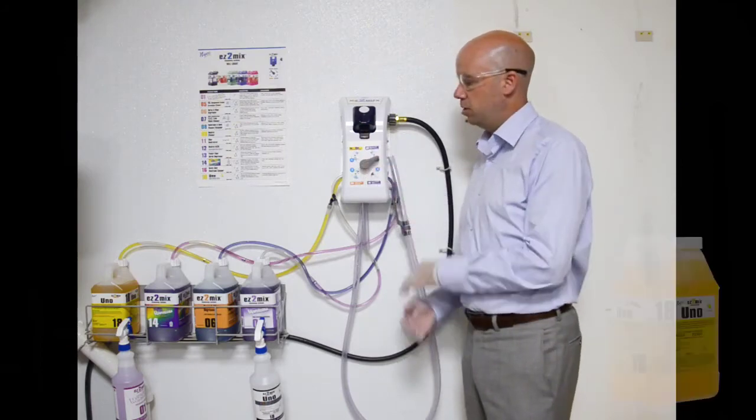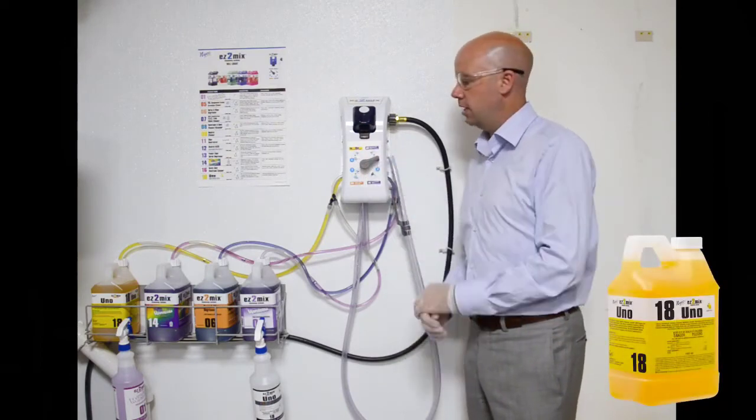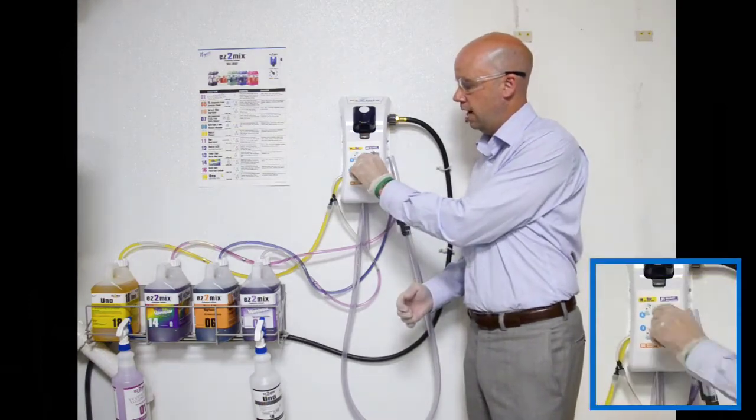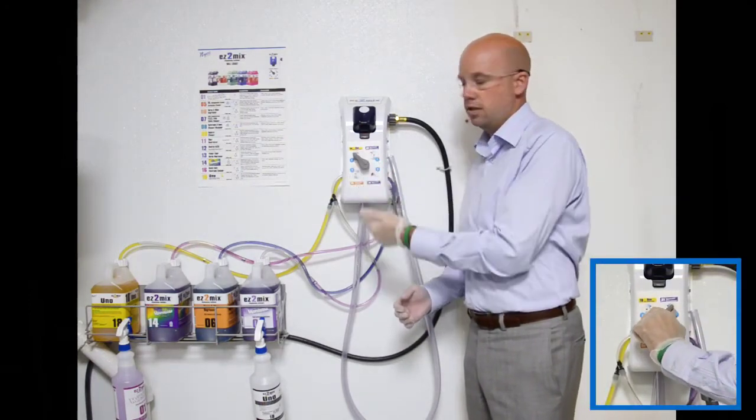In this case, what we want to do is fill up a spray bottle for number 18 UNO disinfectant cleaner. Simply turn the dial over to number 18 until you feel it click in.